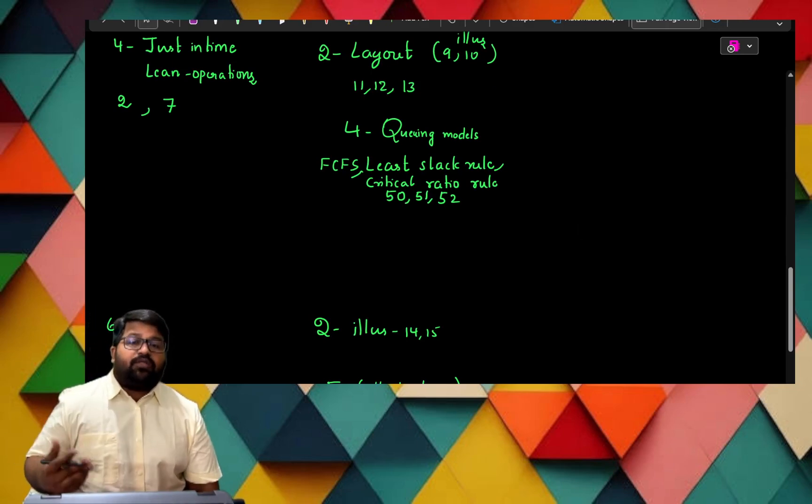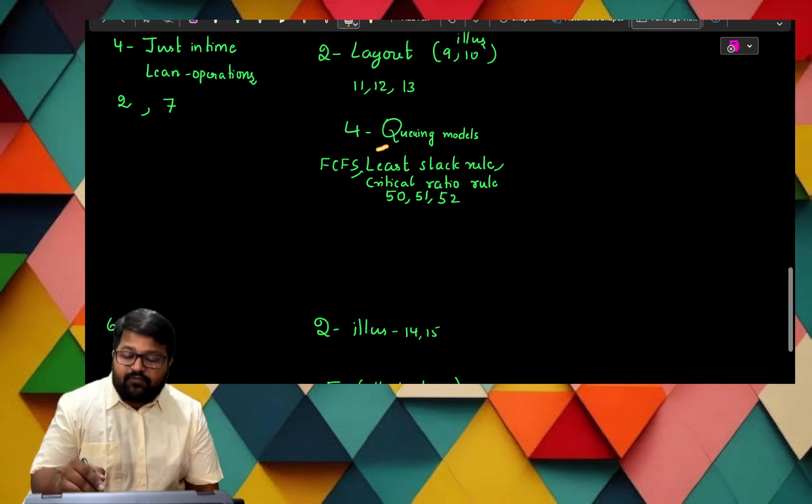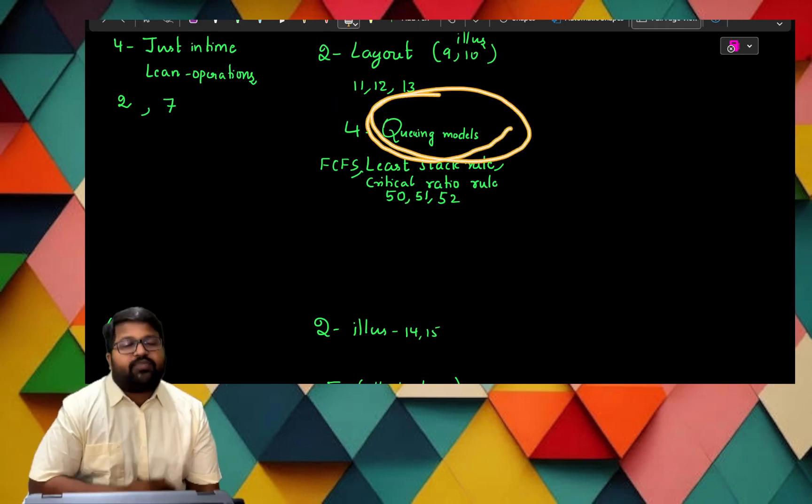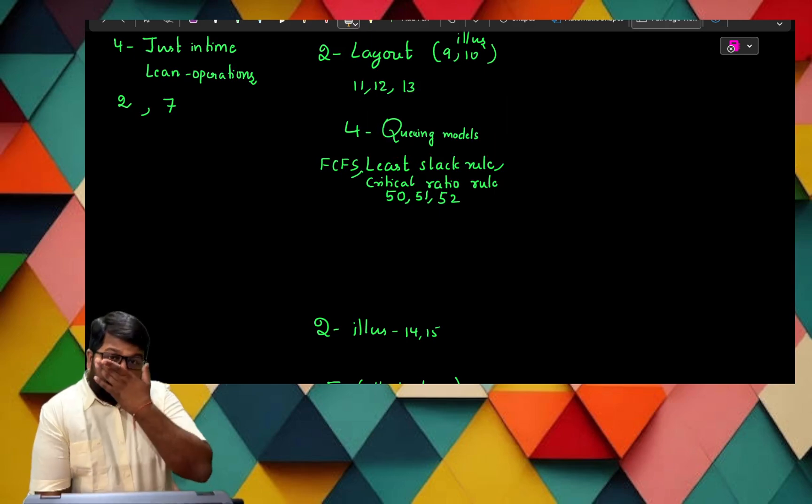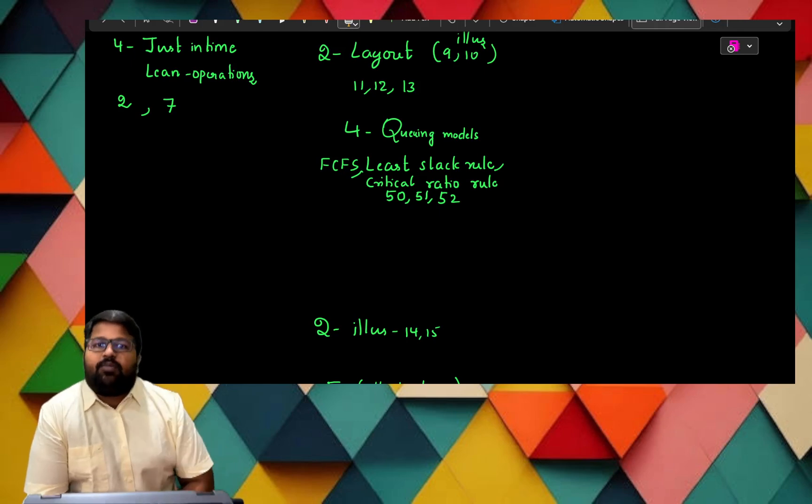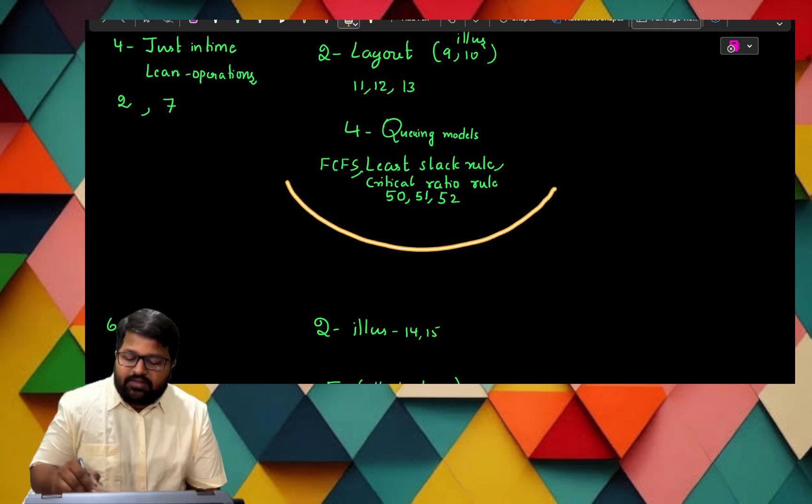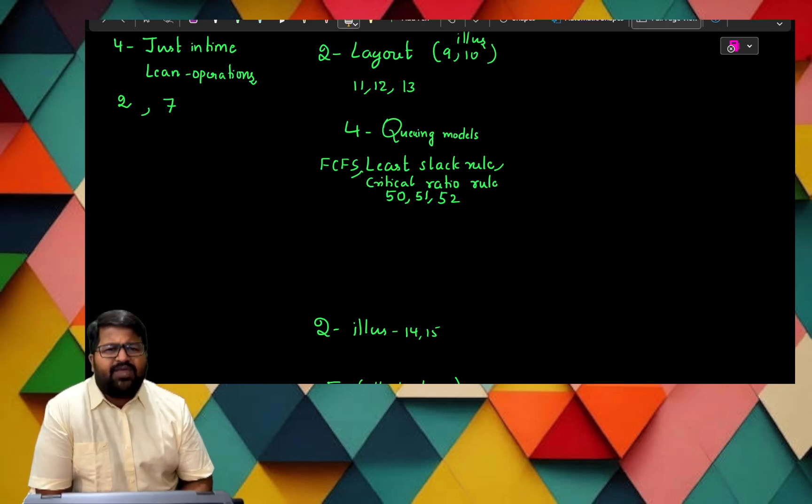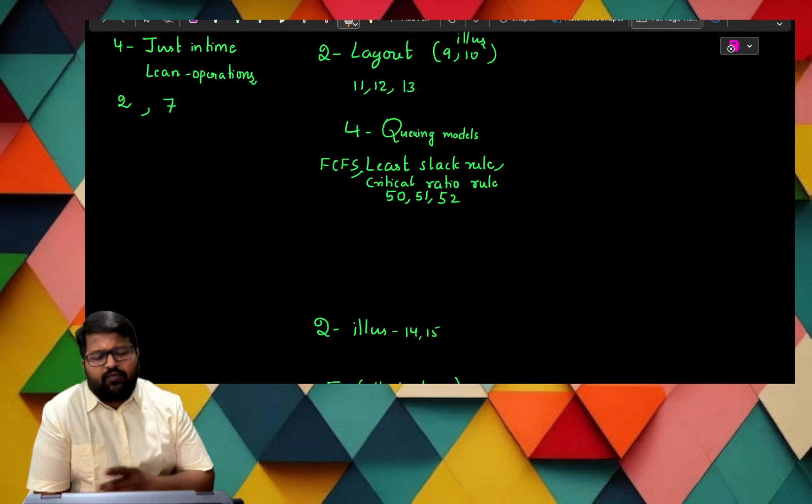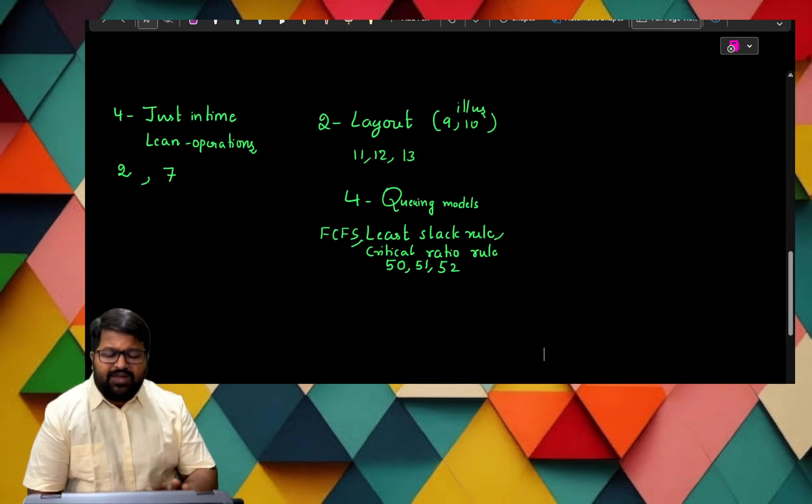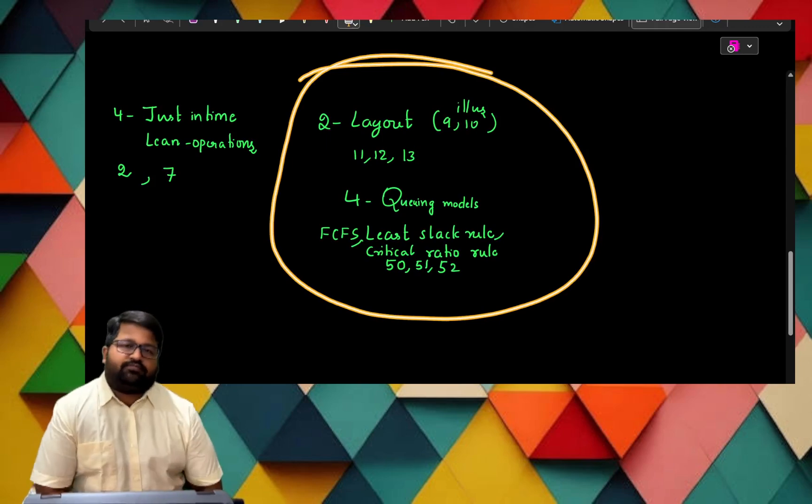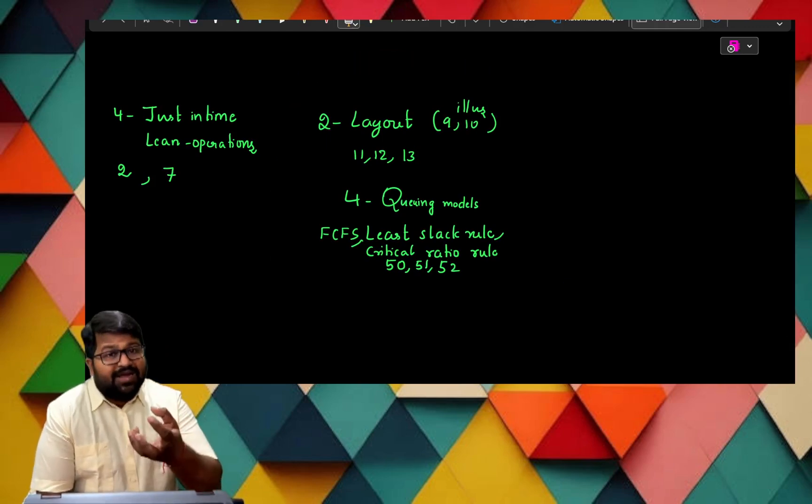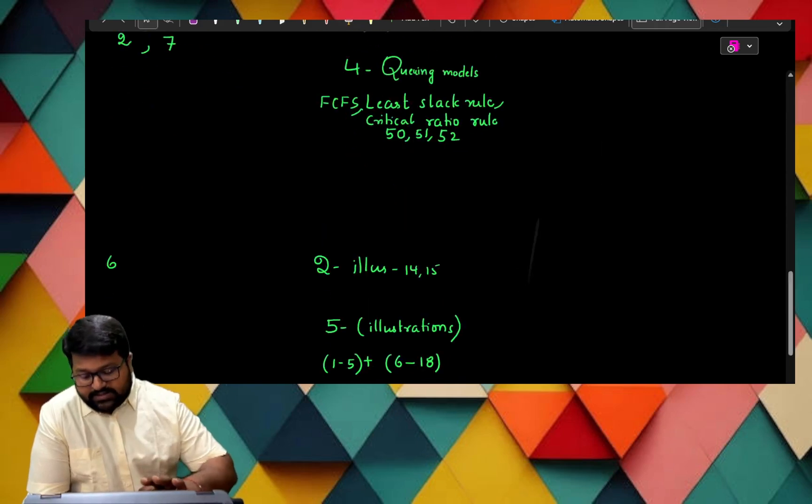In the second module itself, there are layout problems and also the illustrations 9 and 10, and there are three more illustrations: 11, 12, and 13. They also will fall under the category of B. When we go with the next module, that is in B category, the module is fourth. In this, queuing models are there. These queuing models are really important. They are concept-less, formula-based. Queuing models and also critical ratio calculations, slack and all these problems from 50, 51, 52 you have to follow them perfectly.